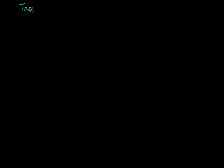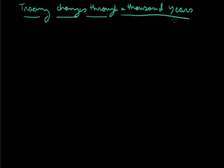Hello friends, let us start the second part of our chapter 'Tracing Changes Through a Thousand Years' in the first chapter of our history. In the first part, we already discussed the medieval period of Indian history, the dates of that period, the changes we faced, and the lessons we get. Now in the second part, we discuss the changing names of India.